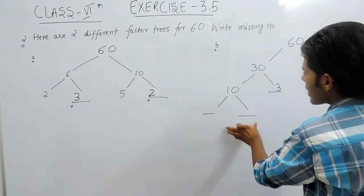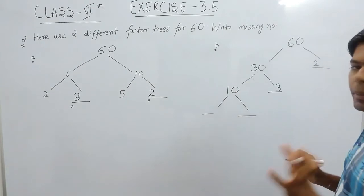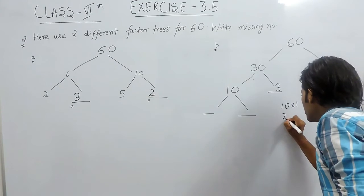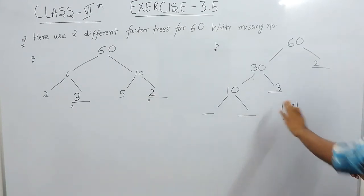Now for this one, there are two blanks, which means we have two different possibilities for 10. Let me tell you the possibilities. We can write either 10 multiplied with 1, or 2 multiplied with 5. These are the two possibilities.